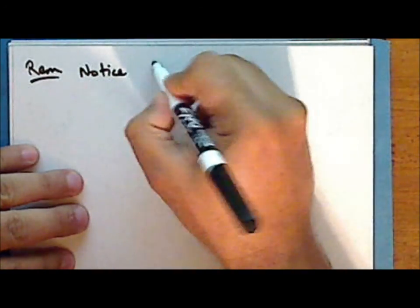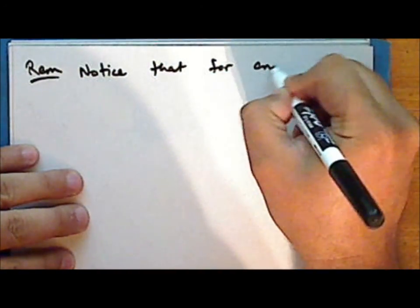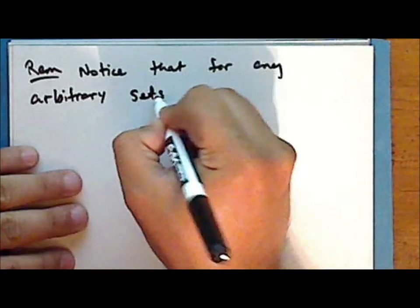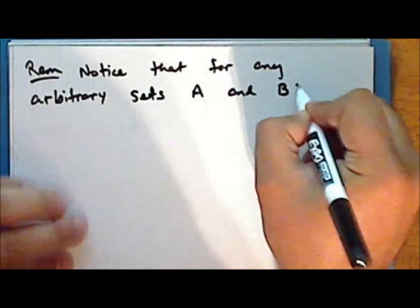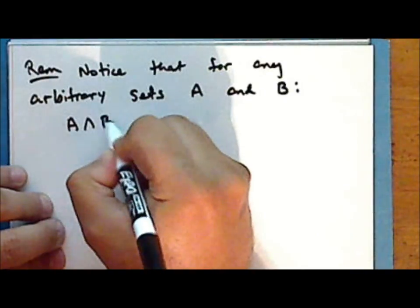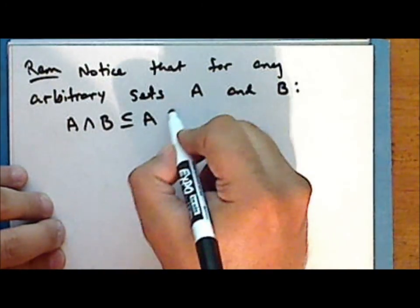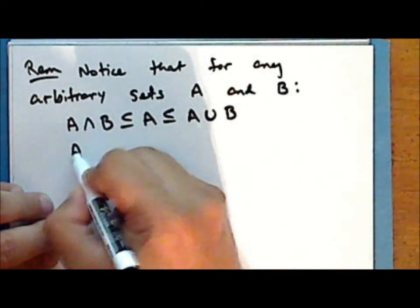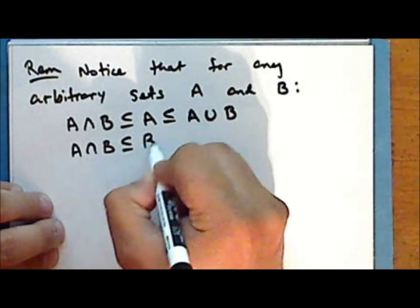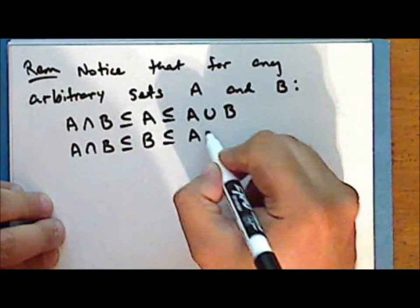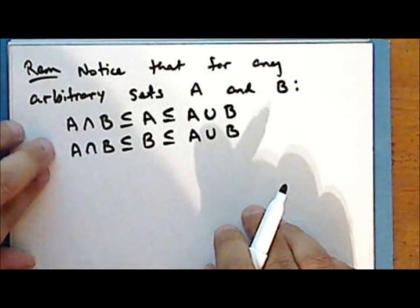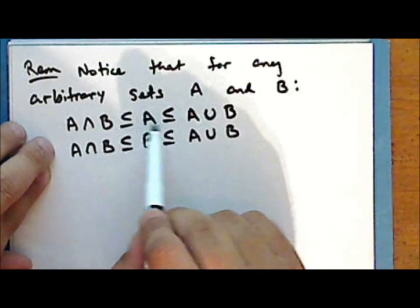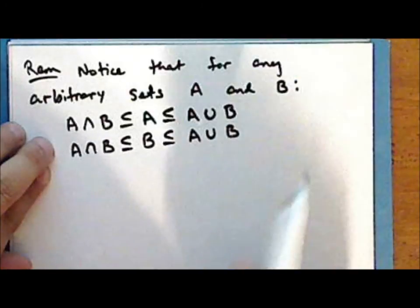Notice that for any arbitrary sets A and B, the intersection of A and B is a subset of A, which is a subset of the union of A and B. And the intersection of A and B is also a subset of B, which is a subset of the union of A and B. This is true because of the lemma we just proved and also because subsets satisfy the transitive property, as we proved in the previous lecture.